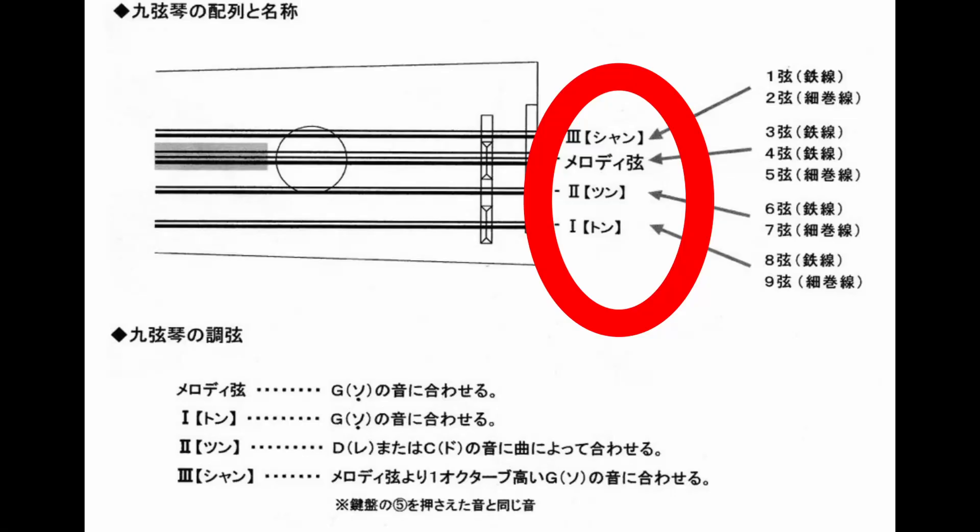A link to that full video is in the description, of course. You'll also note that the tuning guide calls out these onomatopoeic sounds, Shan, Sun, and Ton. The second line is melody, which is just saying these are the melody strings.